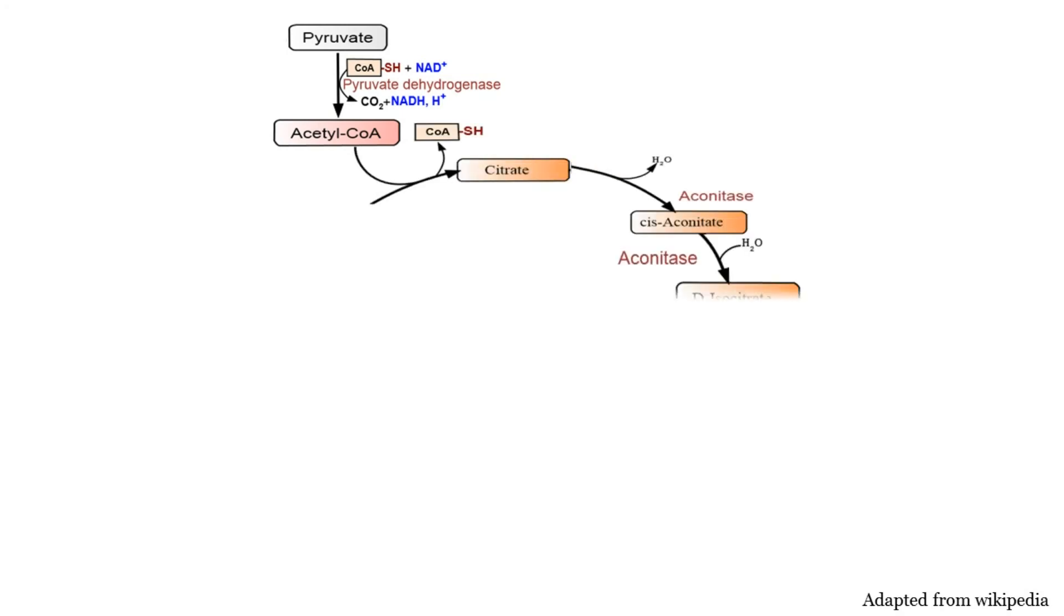Moving on a few steps, going from isocitrate to alpha-ketoglutarate produces 1 NADH and is facilitated by isocitrate dehydrogenase. Next step is from alpha-ketoglutarate to succinyl-CoA, which also produces NADH and is facilitated by alpha-ketoglutarate dehydrogenase.